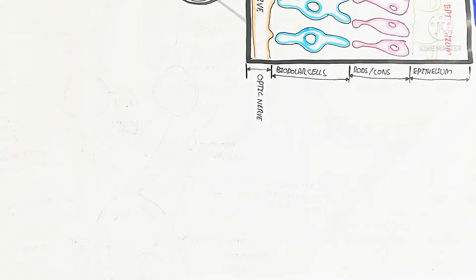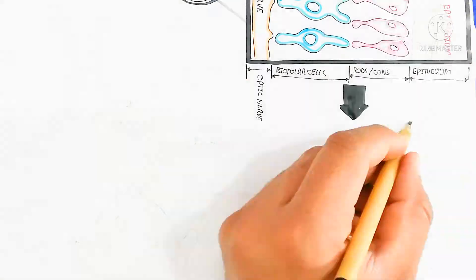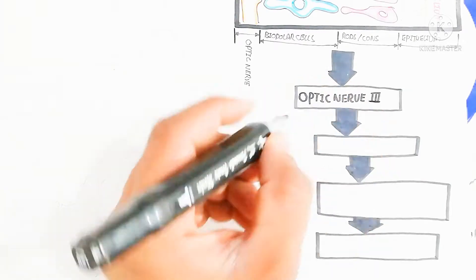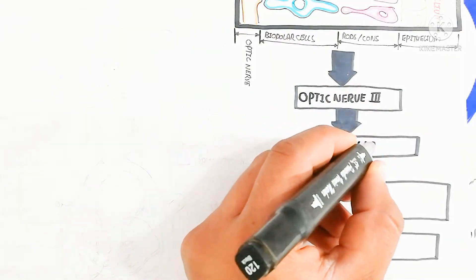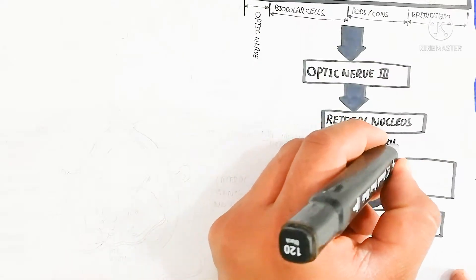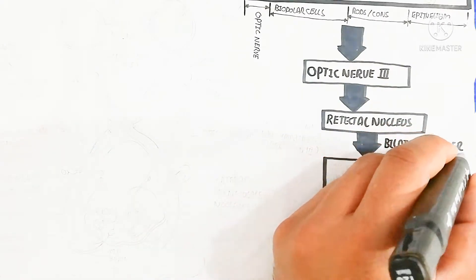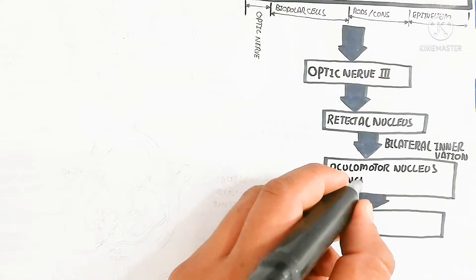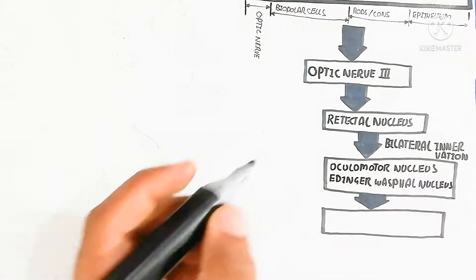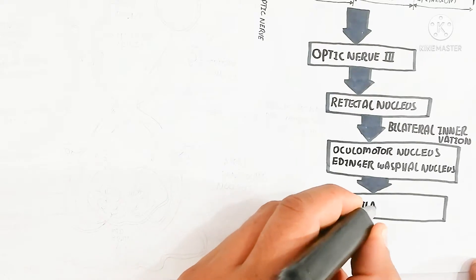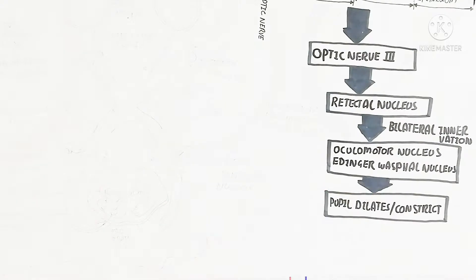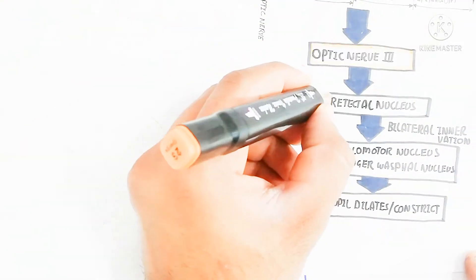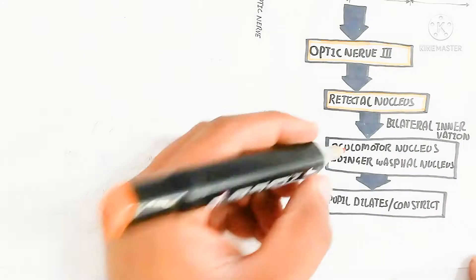The retina transmits the signal to the optic nerve — cranial nerve 2. This signal goes to the pre-tectal nucleus, not the reticular nucleus, and bilateral innervation occurs. The oculomotor nucleus and the Edinger-Westphal nucleus both play important roles: the Edinger-Westphal nucleus is used for the parasympathetic nervous system, while the oculomotor nucleus is used for the sympathetic response for pupil dilation or constriction.